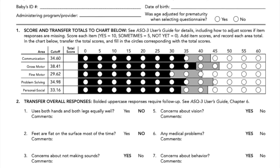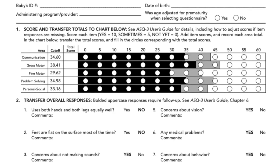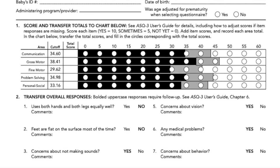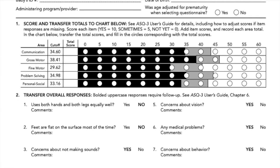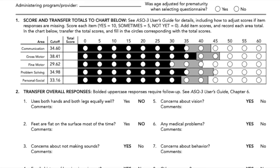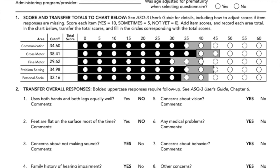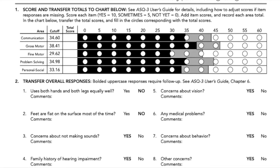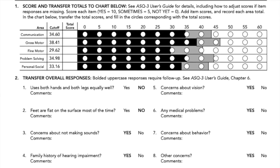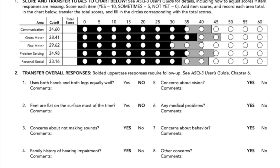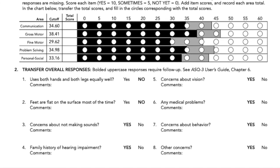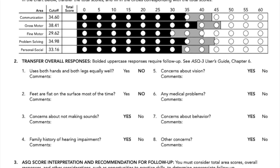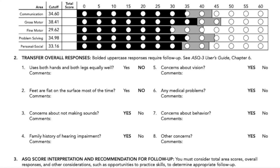Other questions used to assess for areas of developmental concern include asking the parent if the child is able to use his hands and legs equally well, if they're able to keep their feet flat on surfaces almost all the time, asking about any sounds the child is not making, any family history of hearing concerns, any concerns about the child's vision, any current medical problems, concerns about potential childhood behaviors, or any other concerns at all.